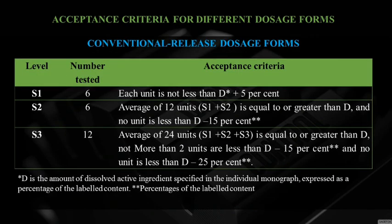Acceptance criteria for conventional dosage forms: D is the amount of dissolved active ingredient specified in the individual monograph, expressed as percentage of label content. Dissolution test is done using six units run for a specific period, then sampled and analyzed for dissolved amount. In the S1 stage, each unit must not be less than D plus 5% — every unit should be above 5% of the specified limit.